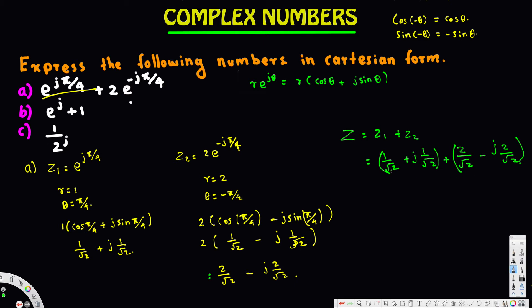Adding them together: the real parts give us 3/√2, and for the imaginary parts we have j/√2 minus j·2/√2, which gives minus j/√2. So our final answer for the first problem is z equals 3/√2 minus j/√2.